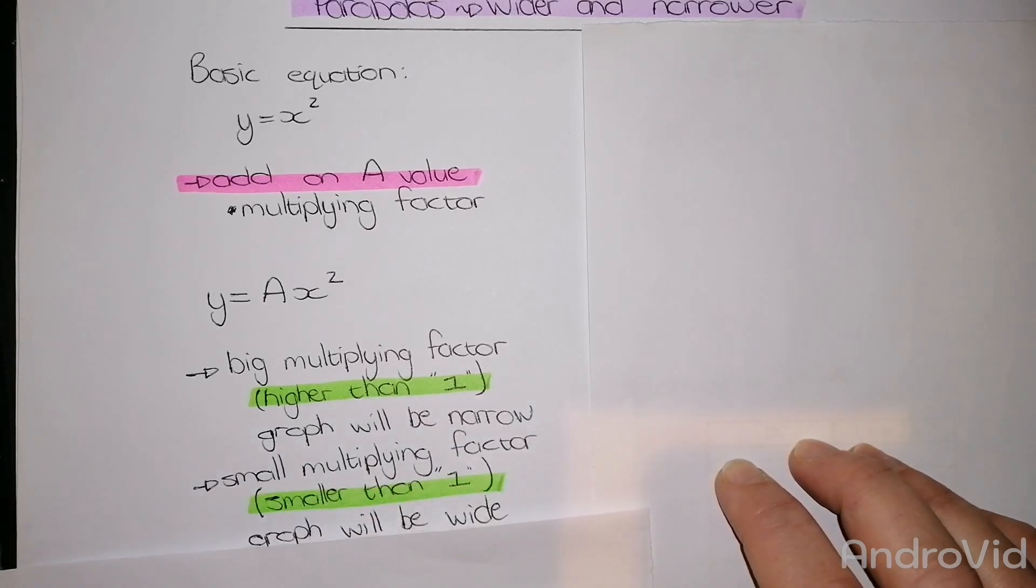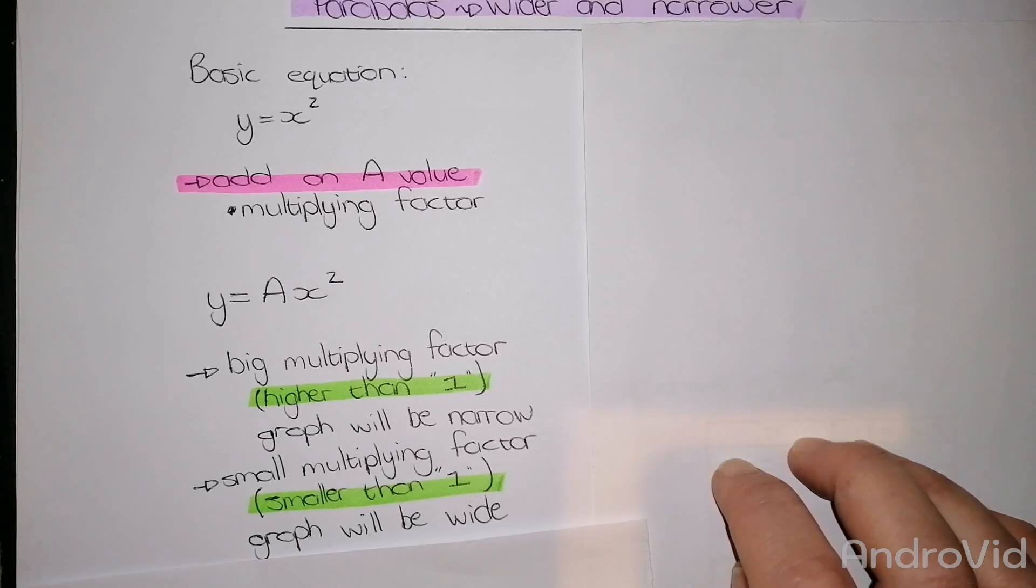When my multiplying factor is smaller than 1, meaning a decimal or a fraction, then my graph will be wider, so flatter and closer towards the x axis.